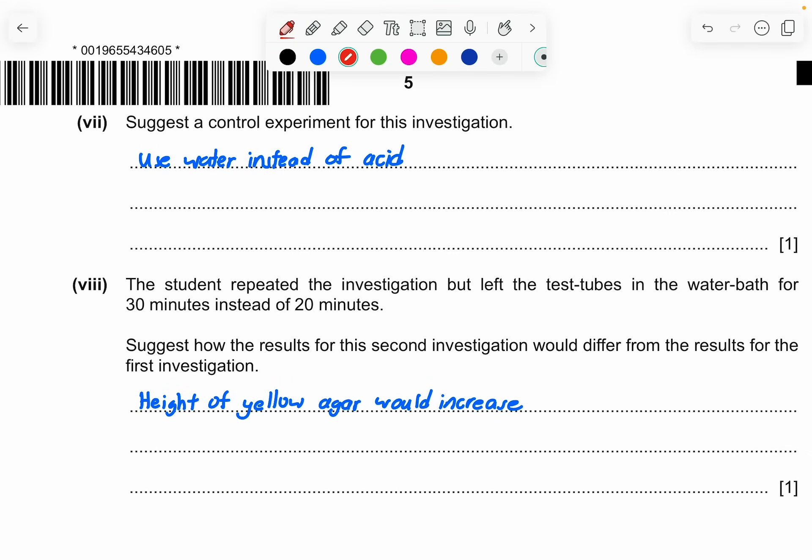So part 7, suggest a control experiment for this investigation. Every time you see the term control, they want you to do something that requires substitution of the things, the IV that you add. For this case, it will be the acid that we use. So the control is by taking out the acid and substitute with water. And see how water can take place in this investigation. Is acid really the main factor that contributes to the change or contributes to the dependent variable later on? So that's why the answer is use water instead of acid.